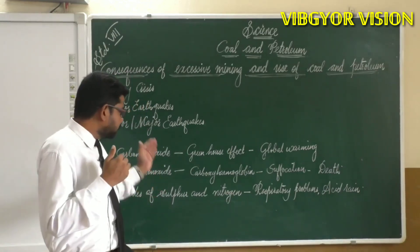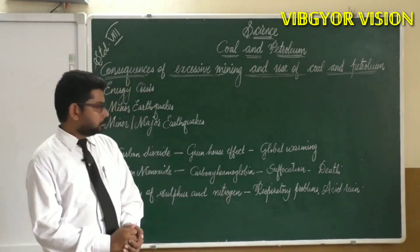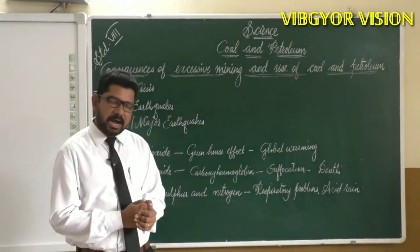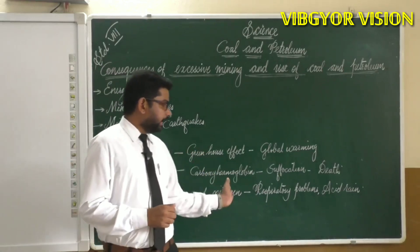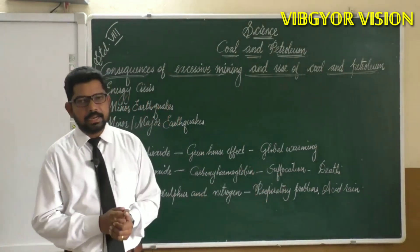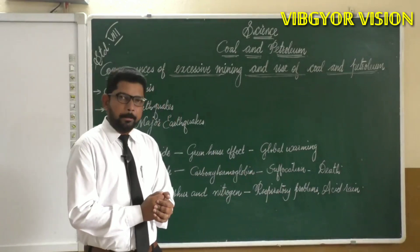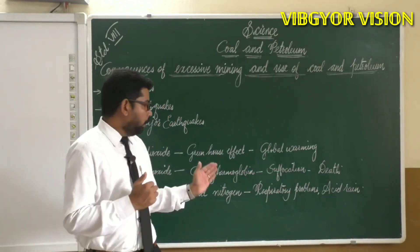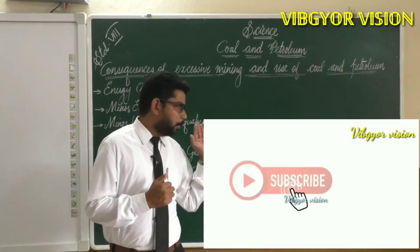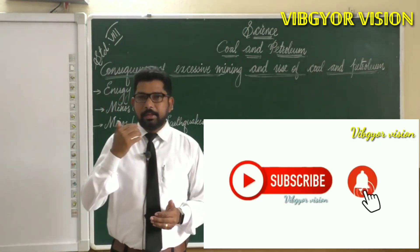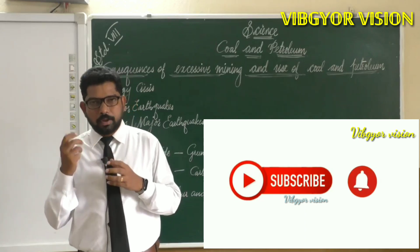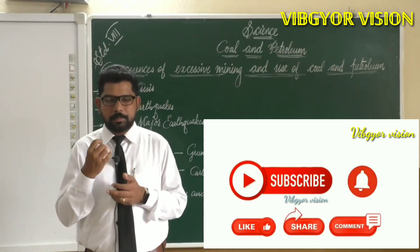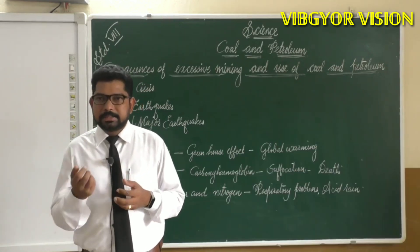The problems associated with oxides of sulfur and nitrogen include respiratory problems and acid rain. We will study acid rain in more detail in a later lesson. Acid rain causes the corrosion of calcium compounds such as lime and also damages metallic structures.